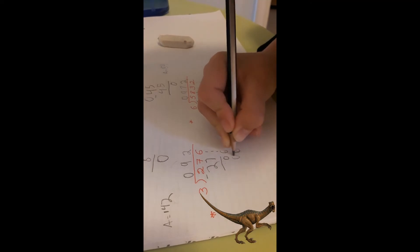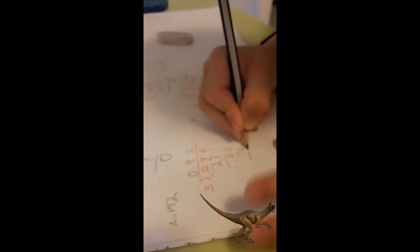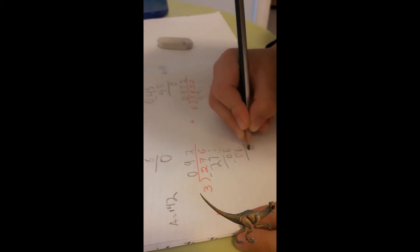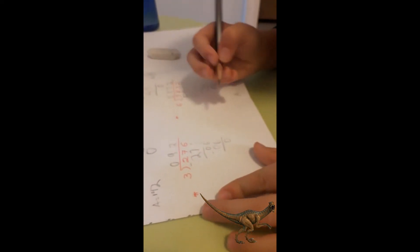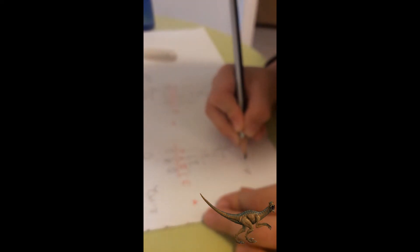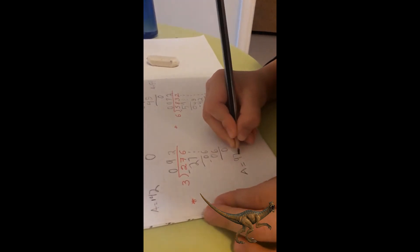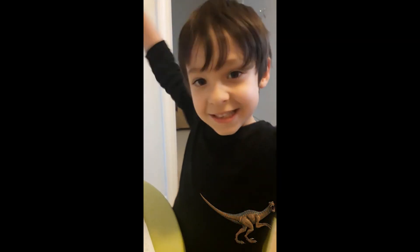Minus. The answer is 92. Perfect, cariño! Un besito. We're going to do many tasks today, Eva, because you need to do many little tasks. Right, love?